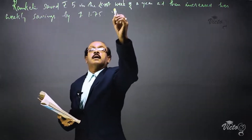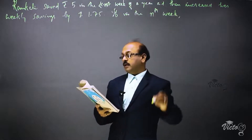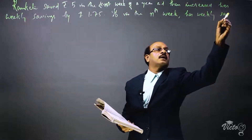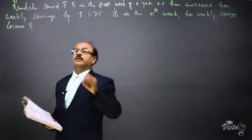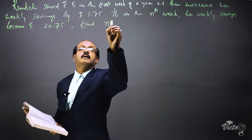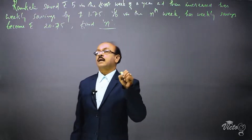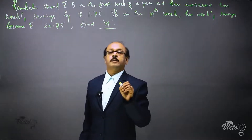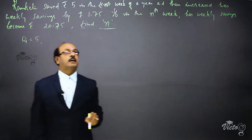If in the nth week her weekly savings become rupees 20.75, find n. The question is to find n — that means in which week her savings became rupees 20.75. She started savings by investing rupees 5 in the first week, that means the first term of our AP is a1 = 5.